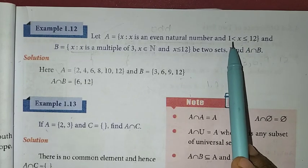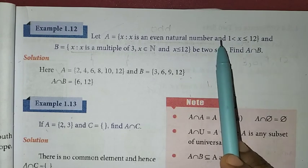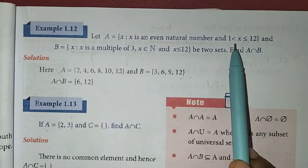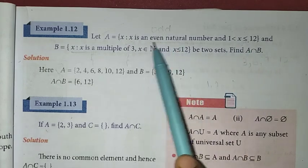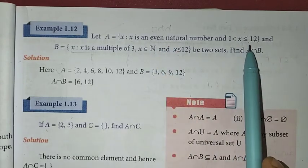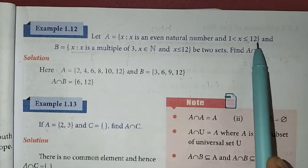So we can include 2, 4, 6, 8, 10, 12. Therefore, set A equals {2, 4, 6, 8, 10, 12}.